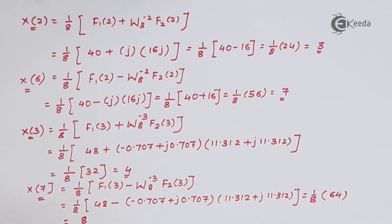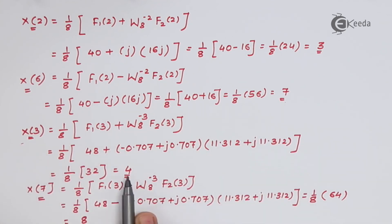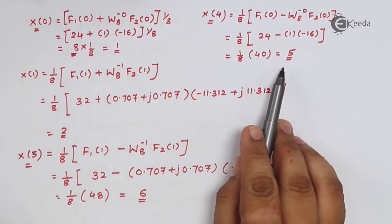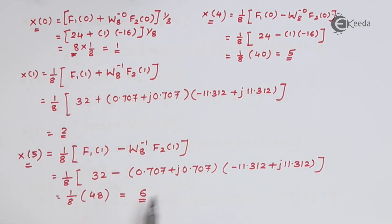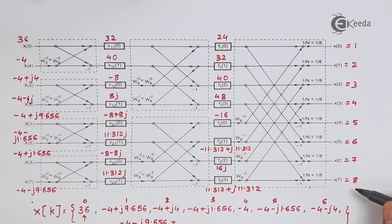We have calculated all the values: x[0] is 1, x[1] is 2, x[2] is 3, x[3] is 4, x[4] is 5, x[5] is 6, x[6] is 7, and x[7] is 8. I will substitute all the values of x[0] to x[7]. This is the response of IFFT, meaning we have calculated x[n] from X[k]. Now we will write the sequence of x[n].